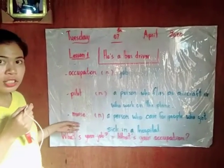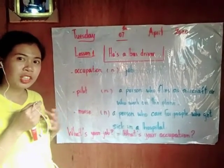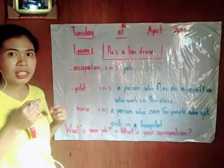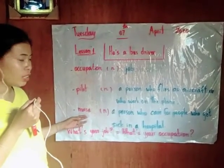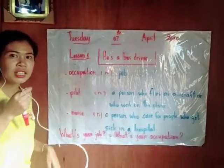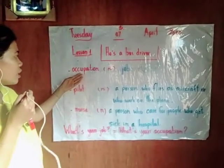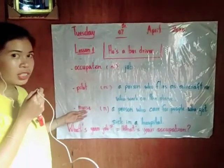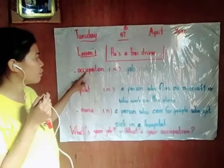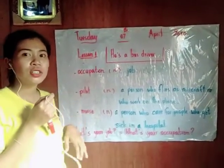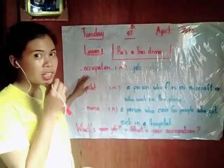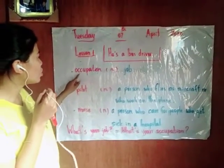One more — she's a beautiful girl, she works in the hospital and she takes care of people who get sick there. So who is she? Listen to me: nurse. Today we study three words — occupation, pilot, and nurse. Now, how many letters does the word 'occupation' have? Count: one, two, three, four, five, six, seven, eight, nine, ten — occupation has ten letters.